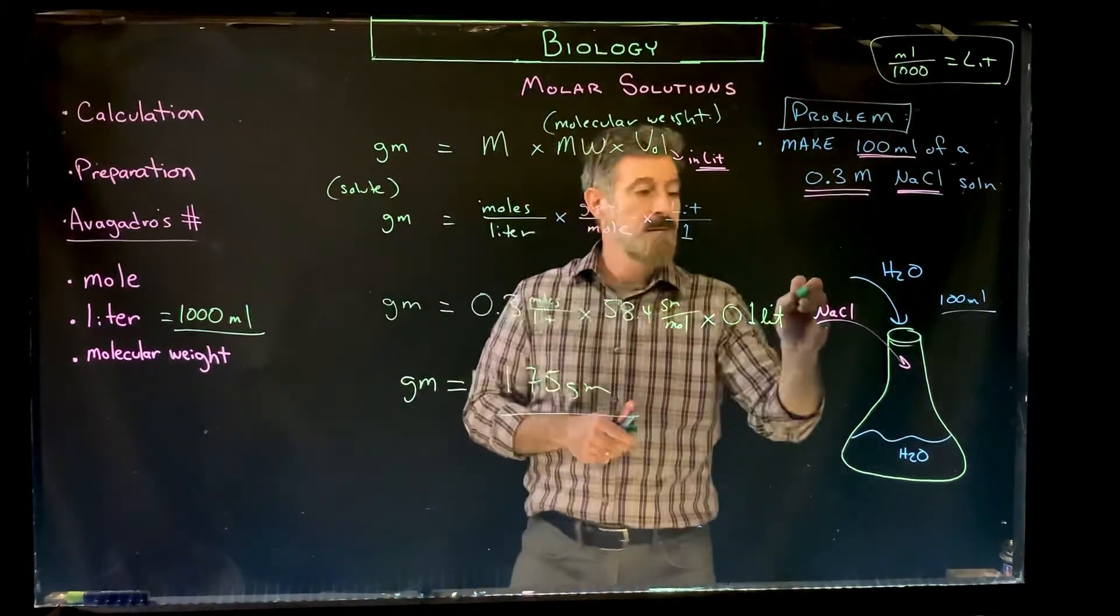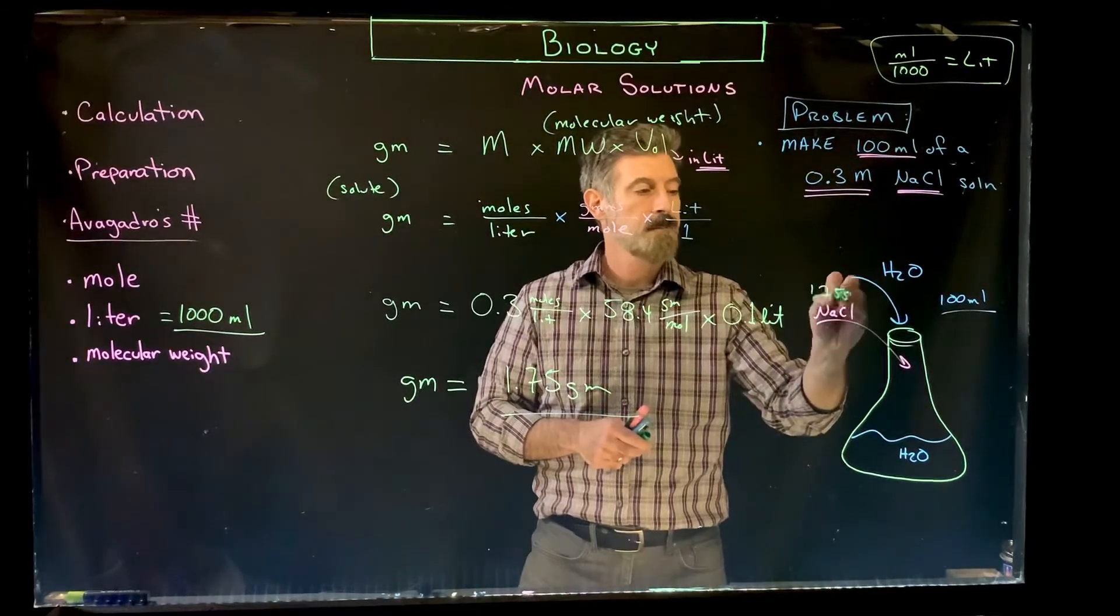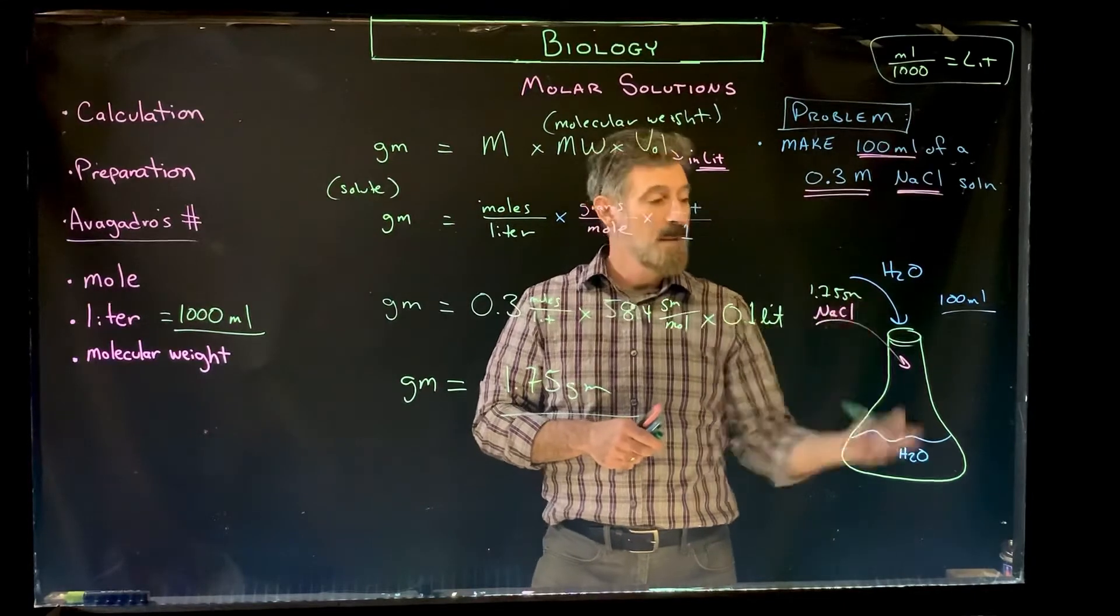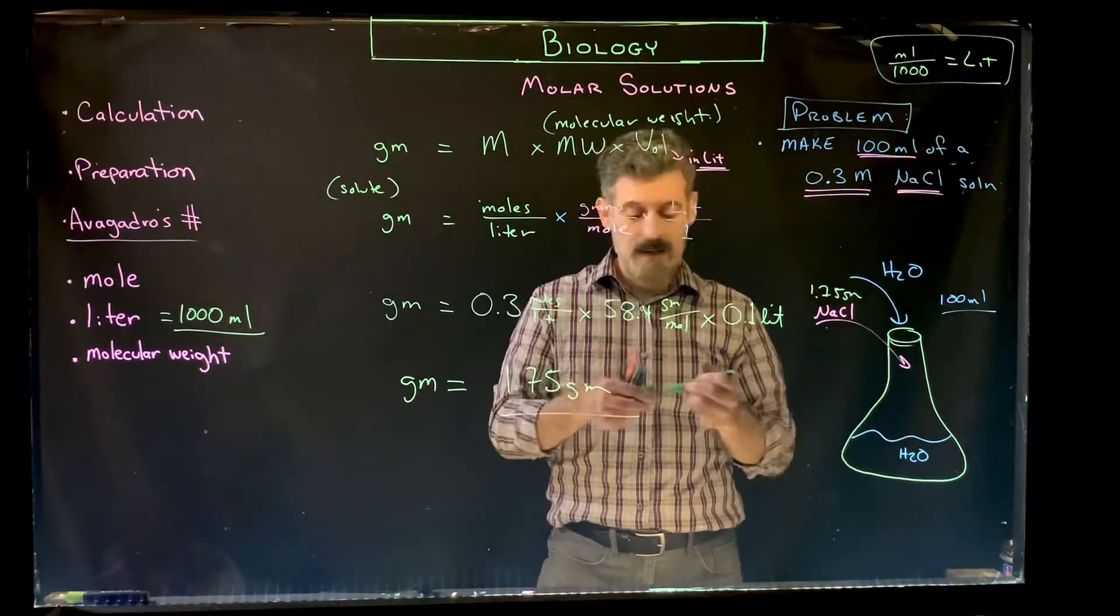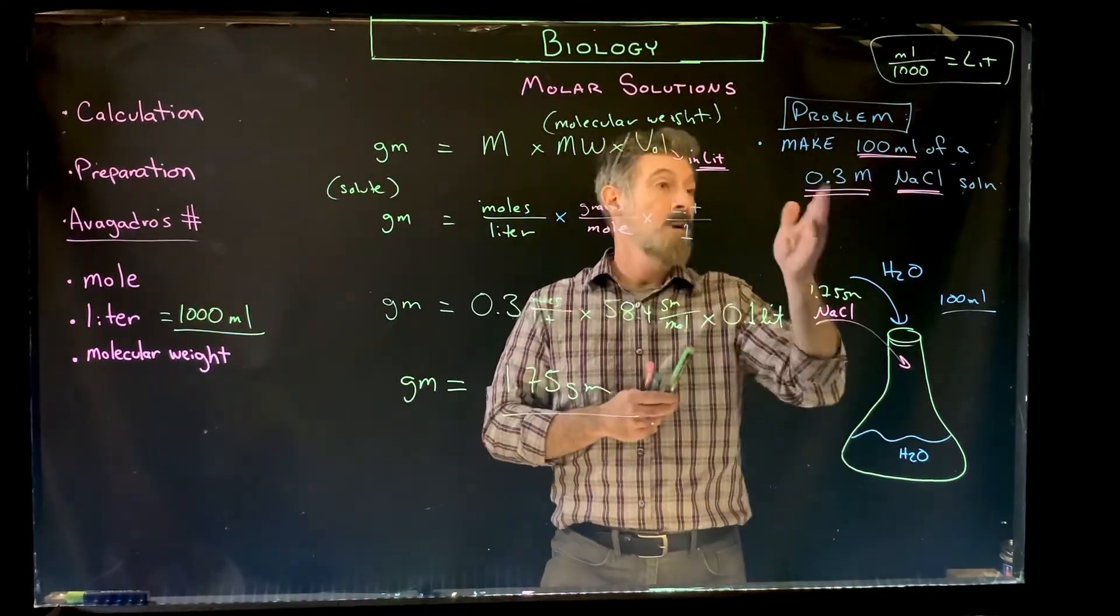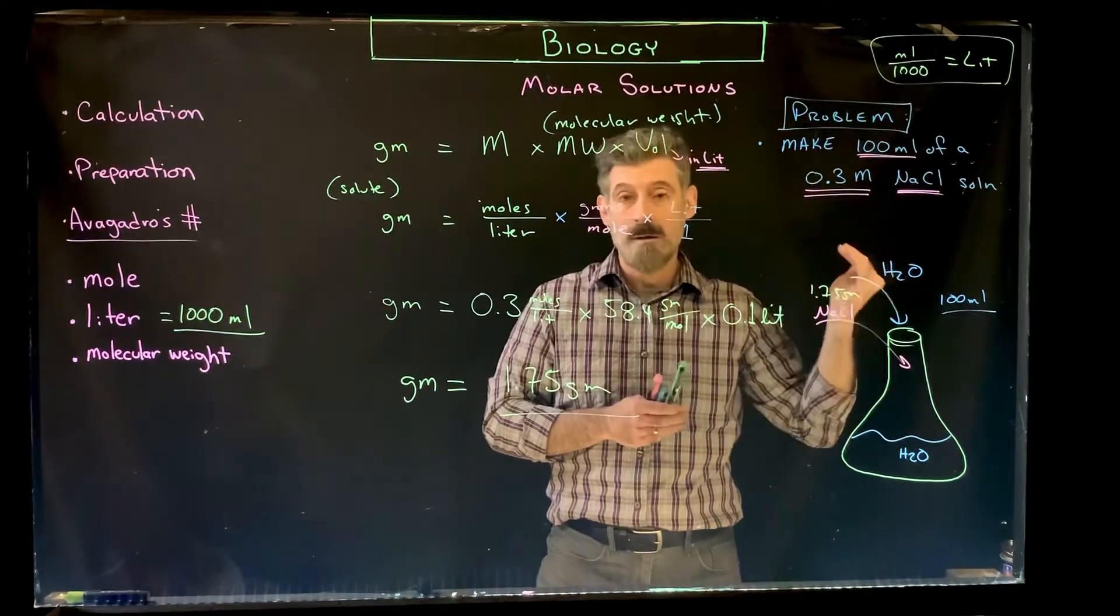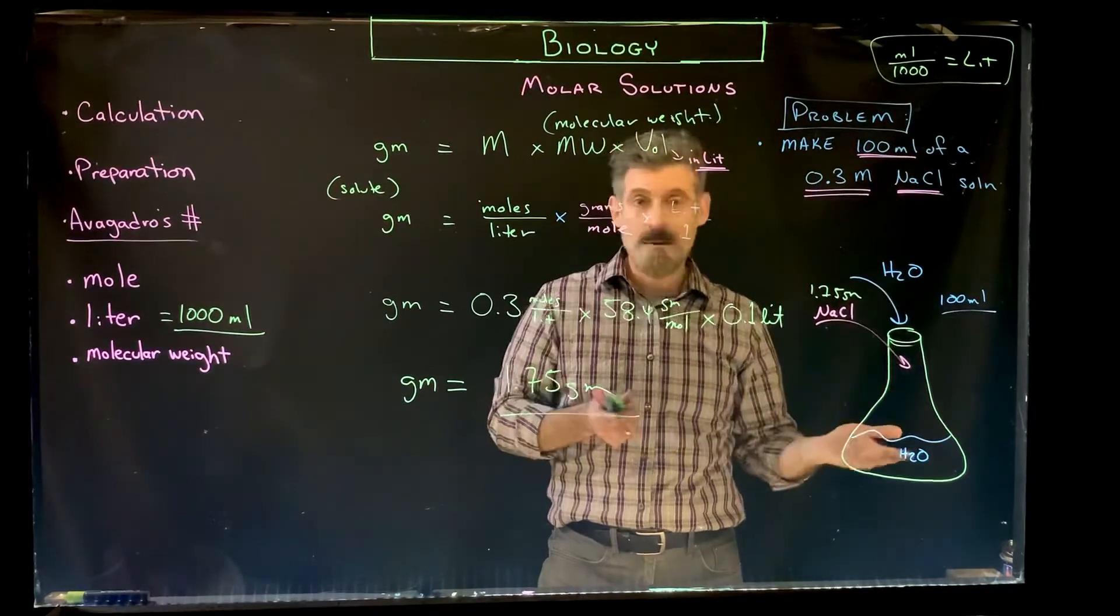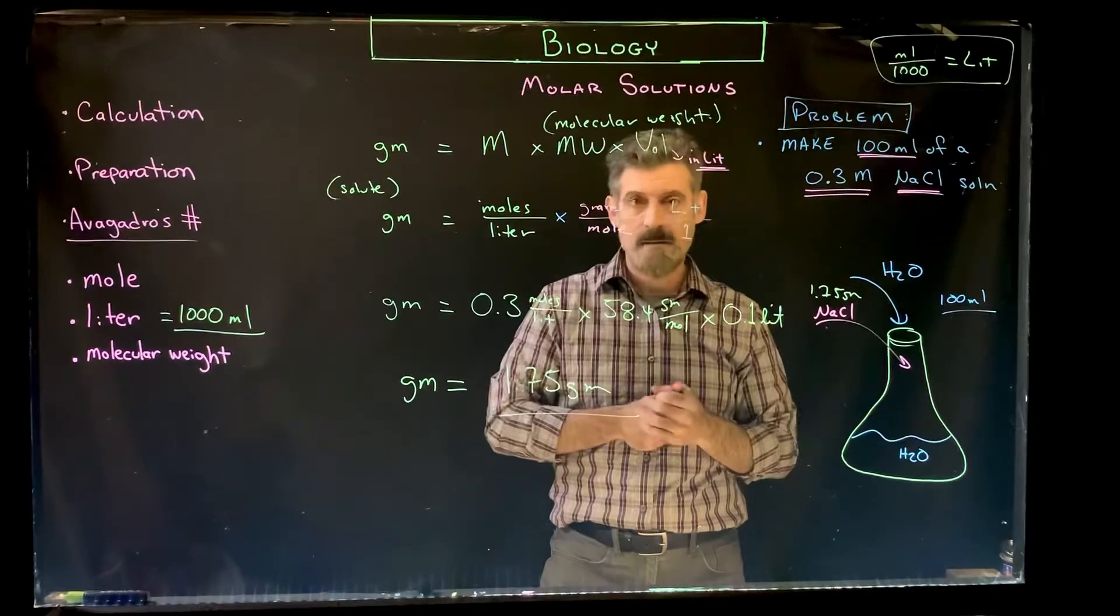And that is 1.75 grams. That means if I took 1.75 grams of salt, weighed it out, mixed it with the 100 mils of water, I'd have a 0.3 molar solution. And I'd have 100 mils of that solution and I'd be set to go.